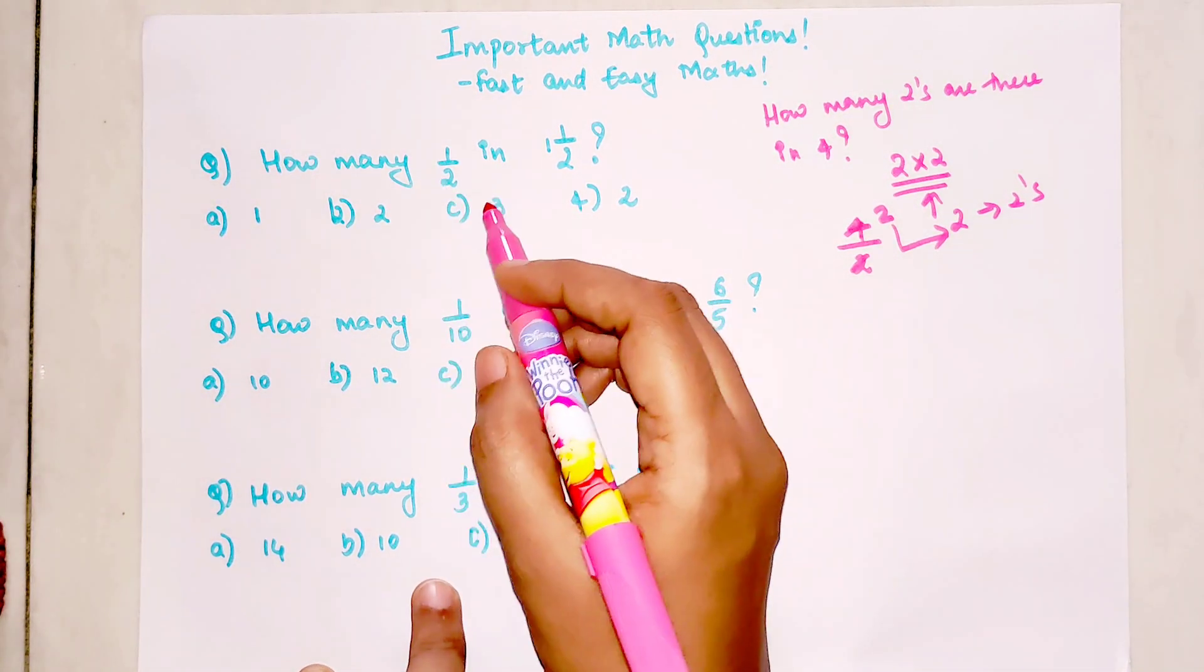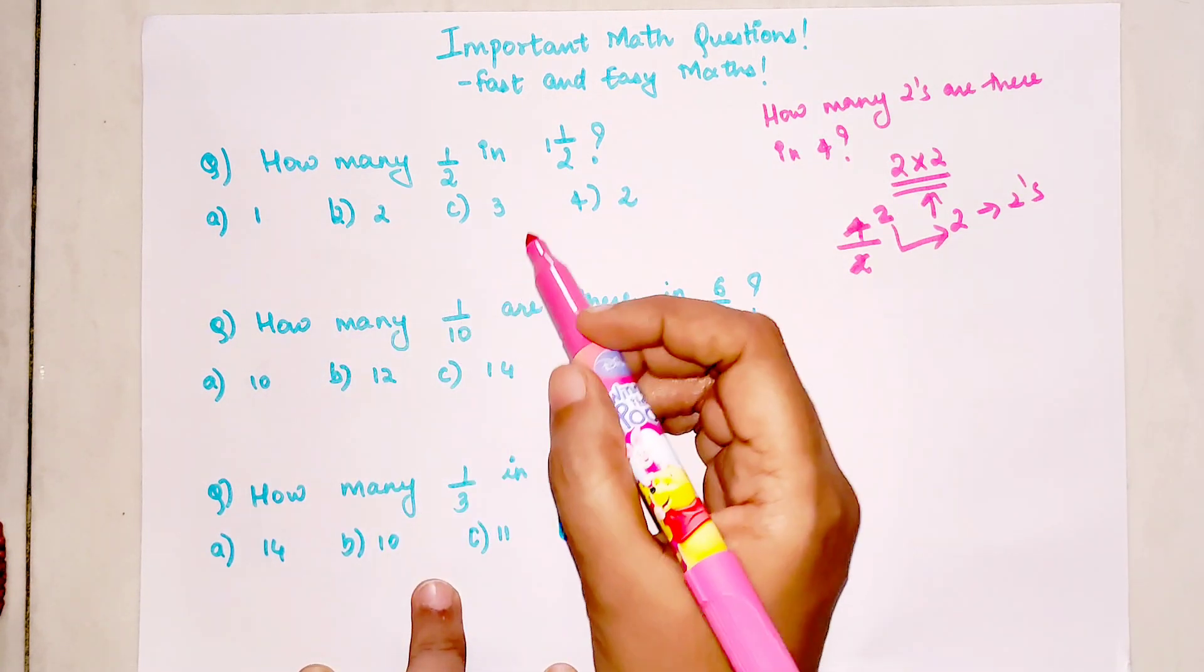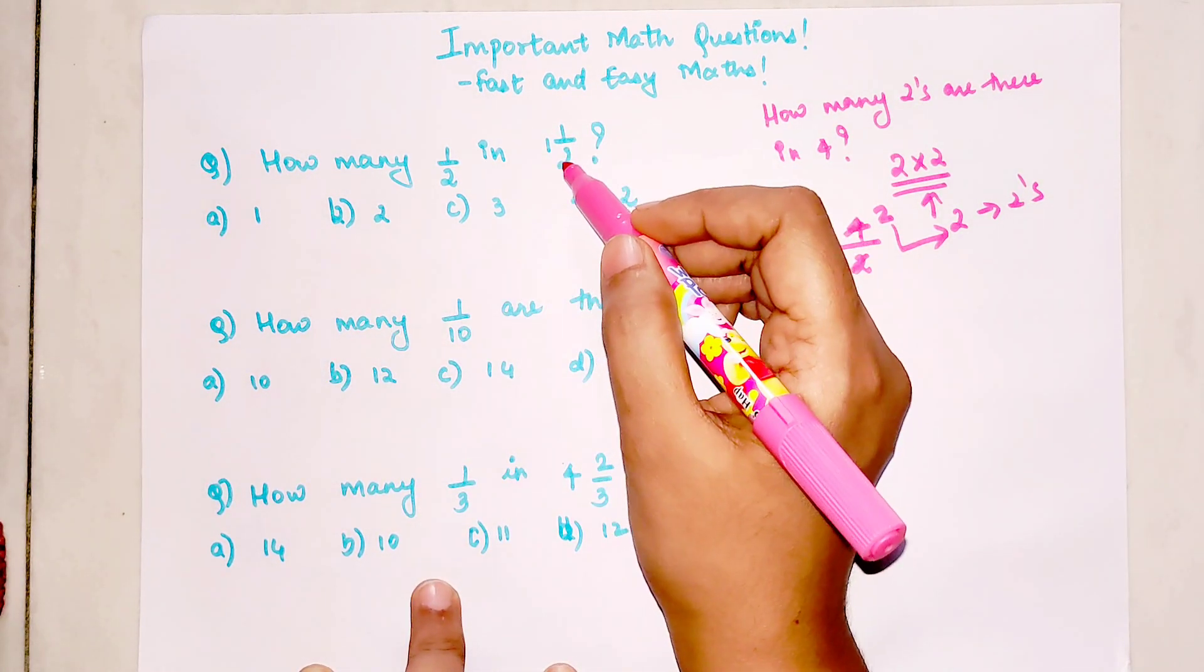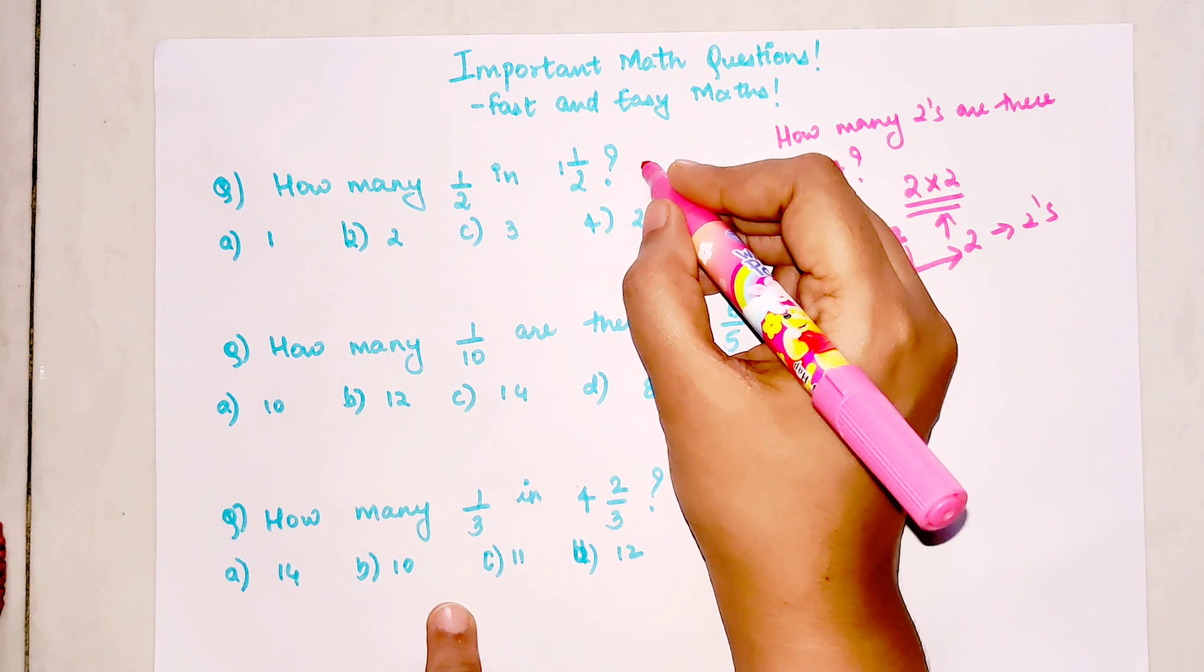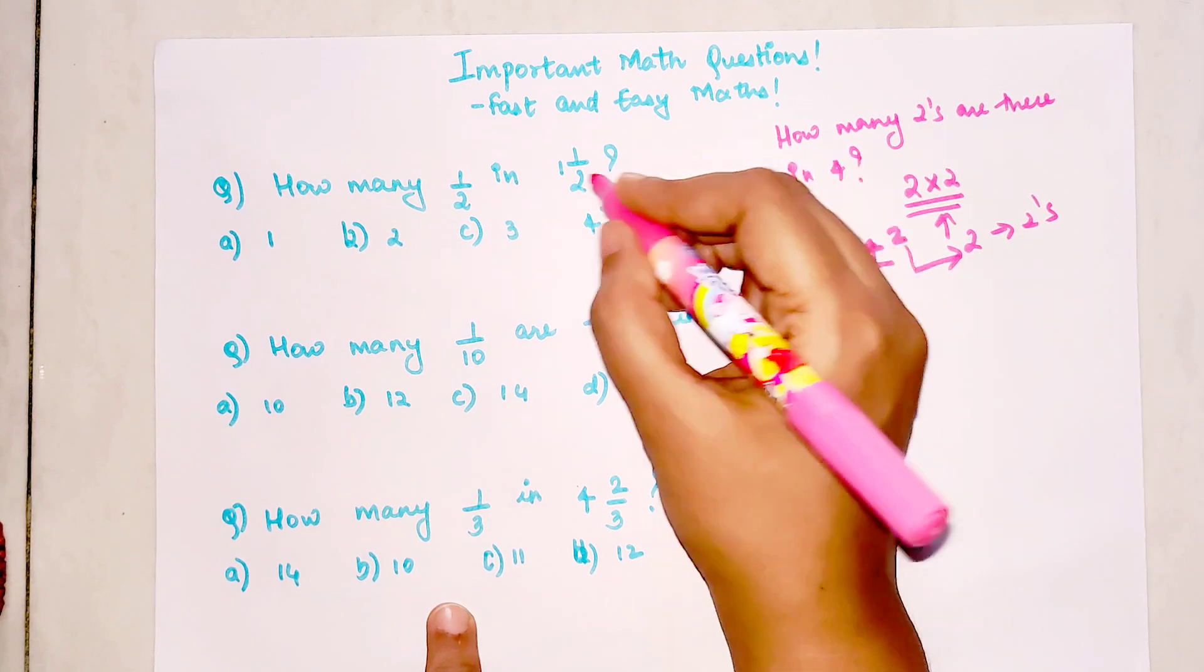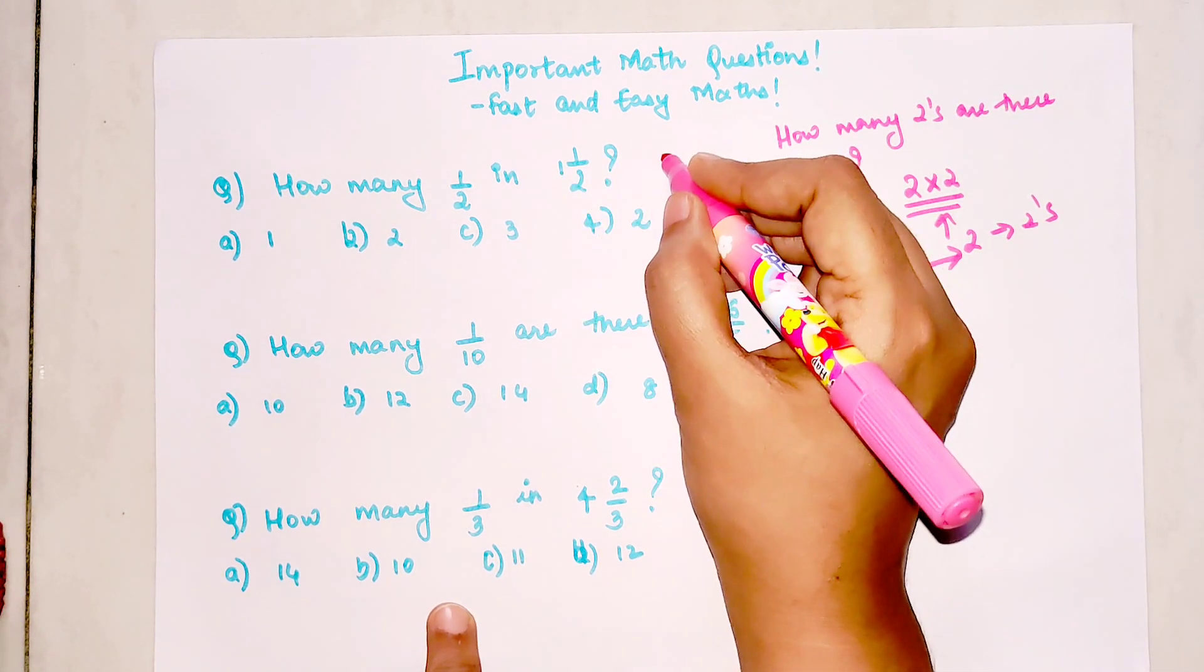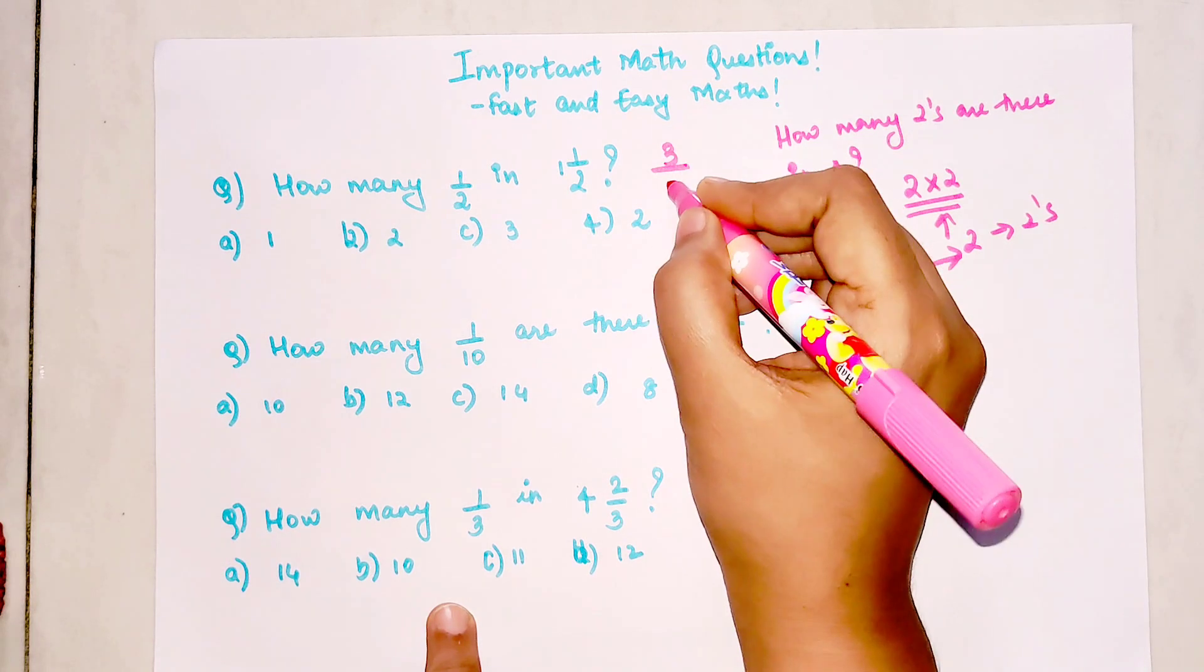When you have a mixed form, you can try this in terms of improper fraction. That will be 1 times 2 plus 1, which will get you 3/2.